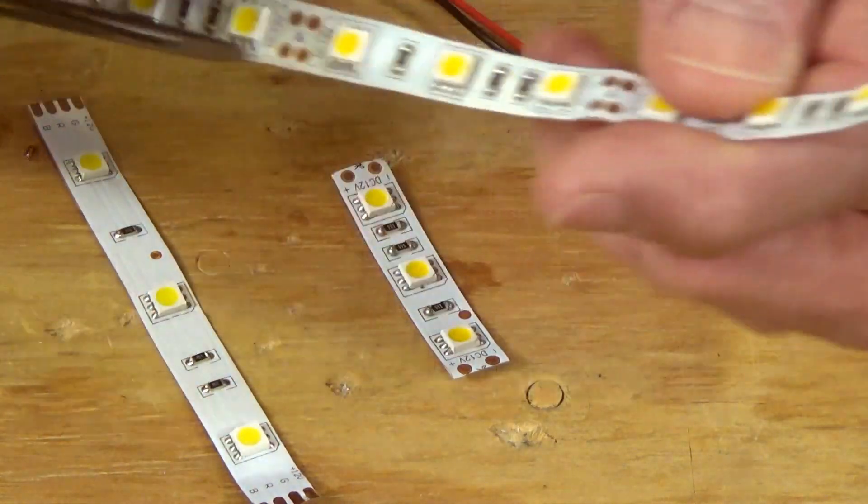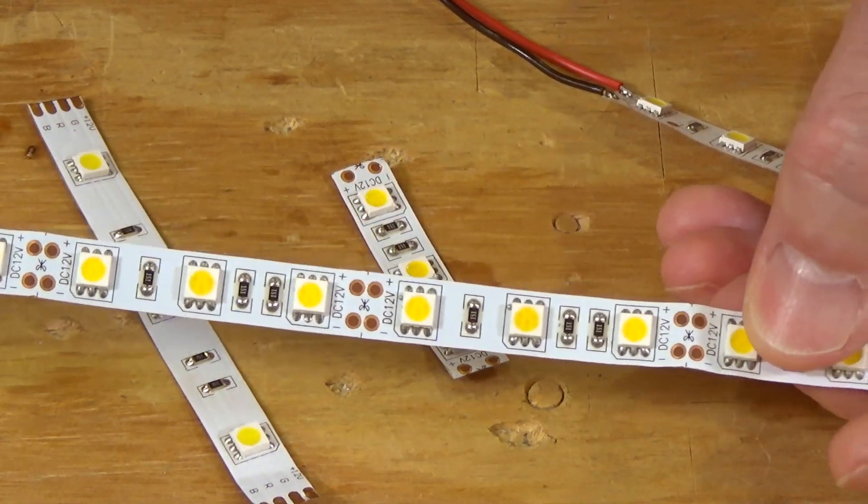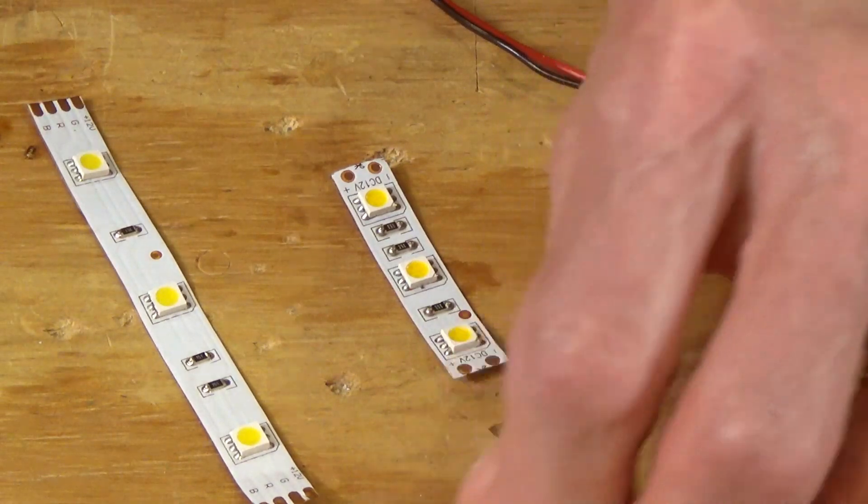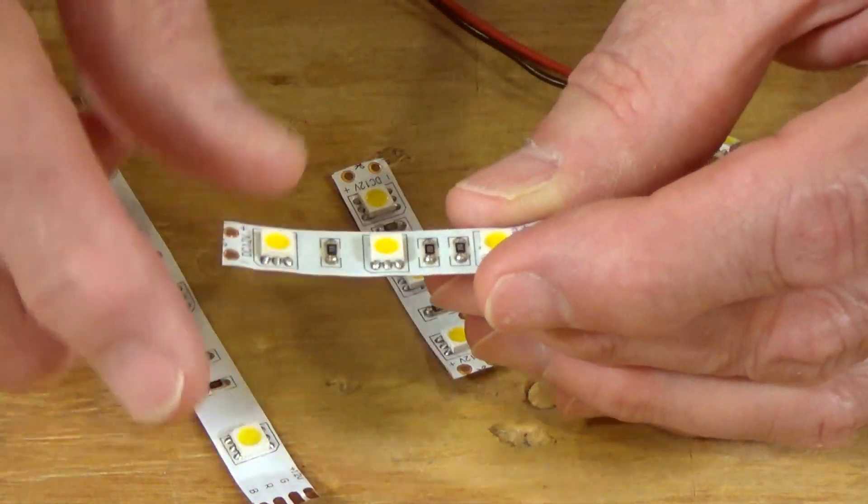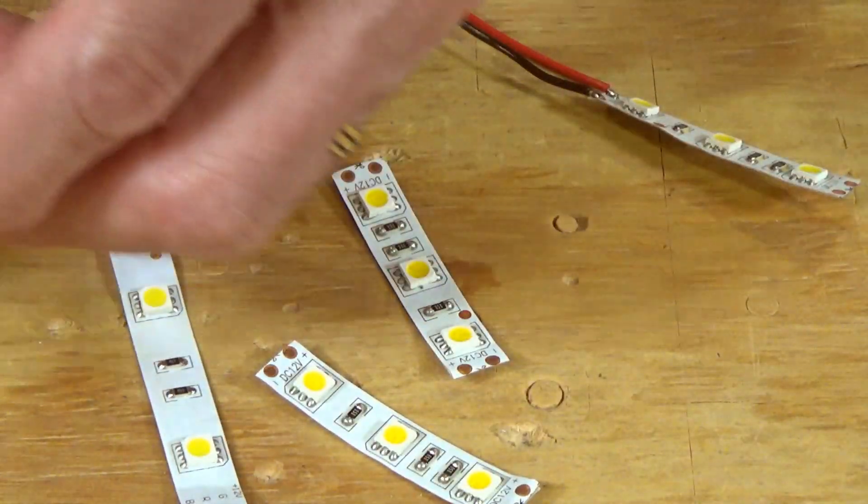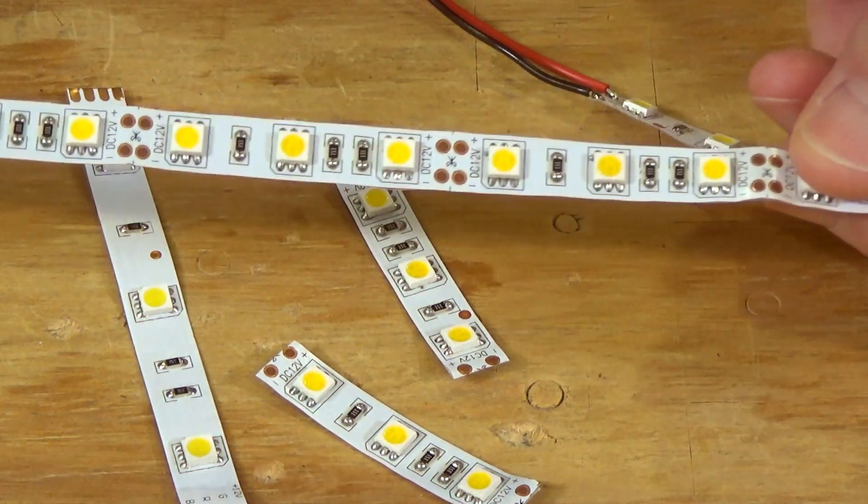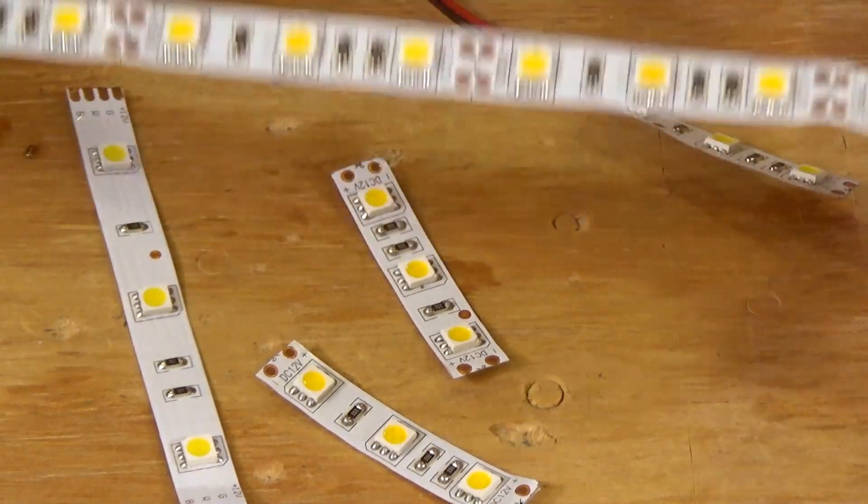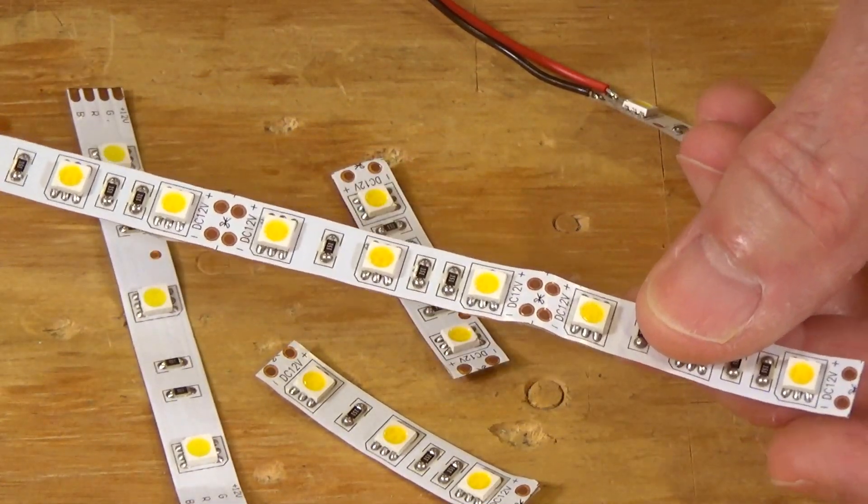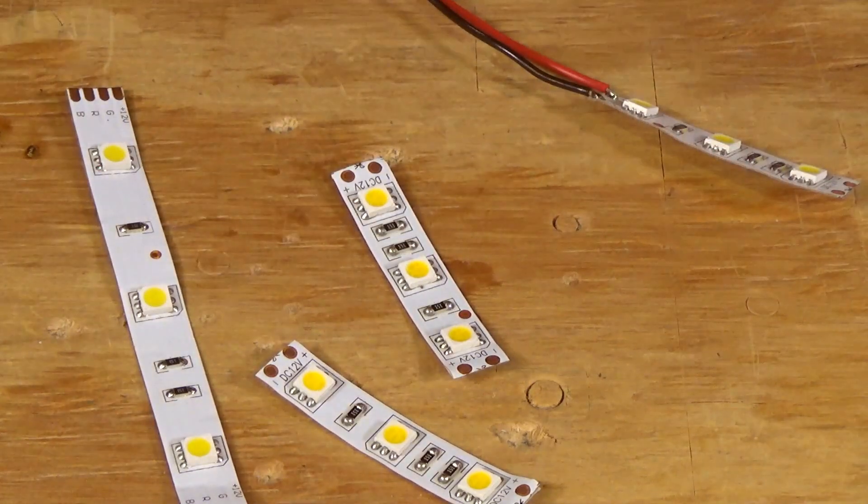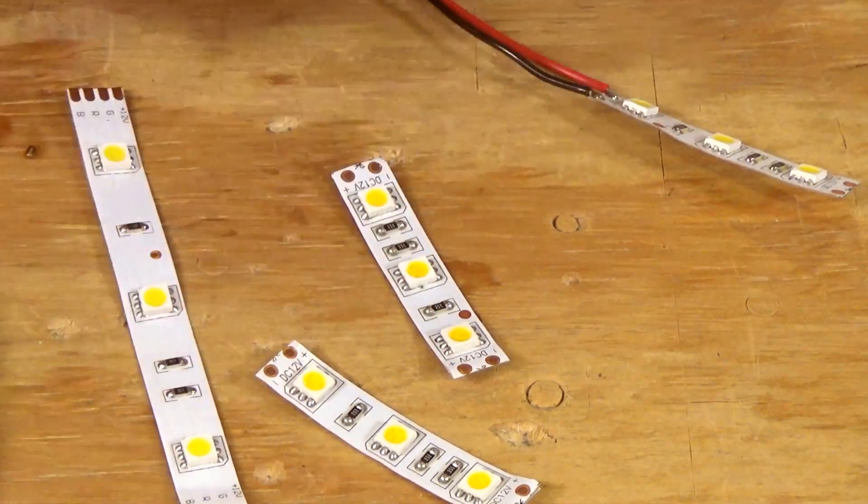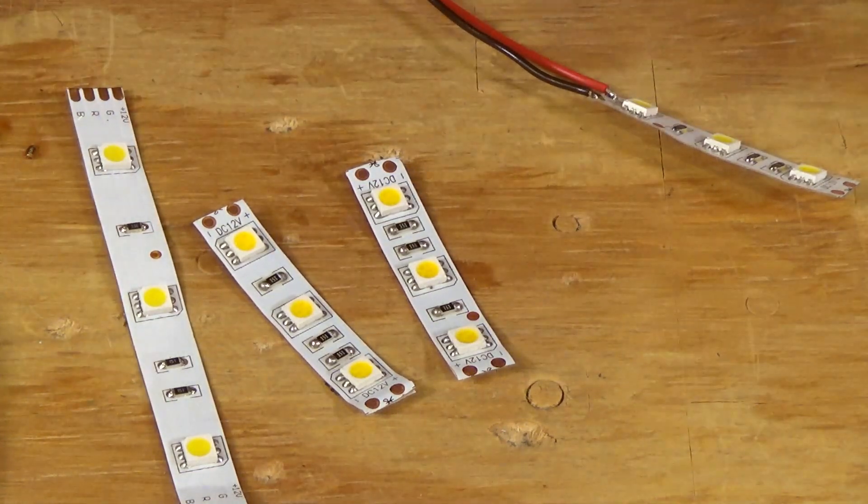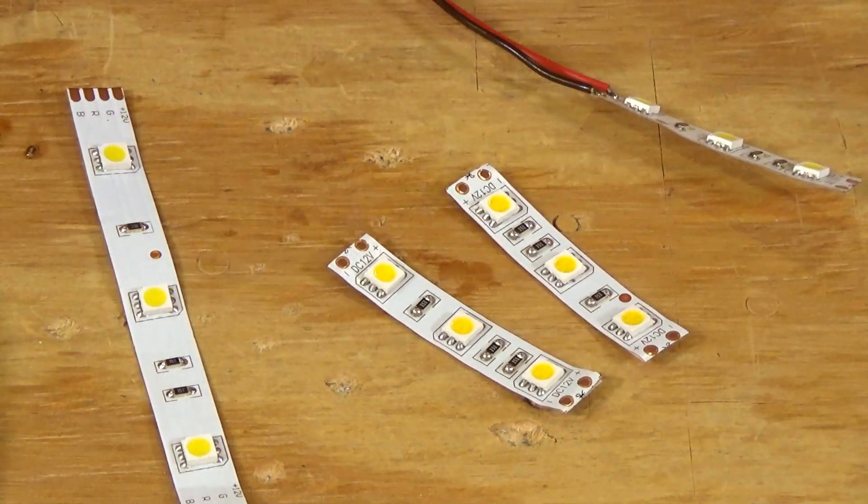You can use these underneath the upper deck of a layout to light the layout. I have a couple of friends who have done that. The problem with these is each one of these strips takes about one amp per meter, or about every three feet it takes one amp of current to power these. That can add up. Here on the Piedmont Southern, where I have about a hundred feet of overhead trackage, that's going to be something like 30 amps to power these if I went that route.